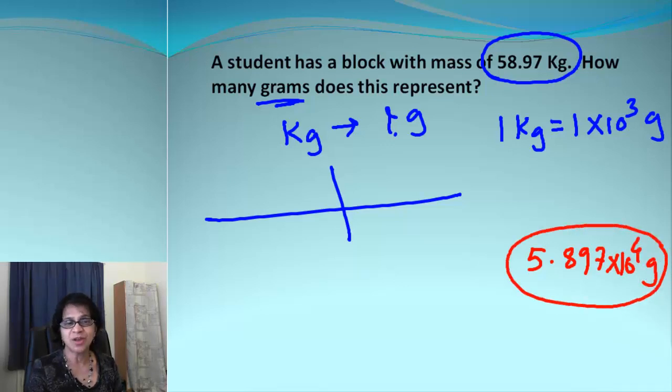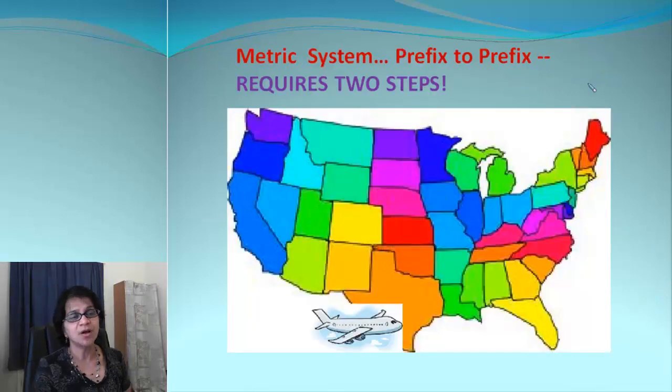So I hope you can get that answer. So now we are going to convert from prefix to prefix. Milli, centi, kilo, nano, these are called prefixes. So if you are converting from prefix to prefix, again we are going to go back to our US map.